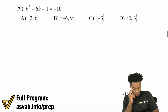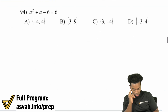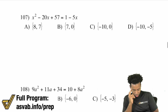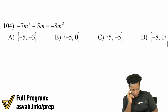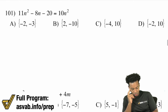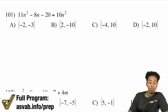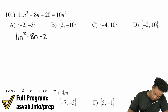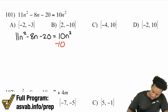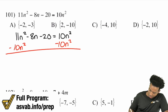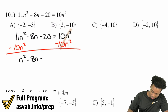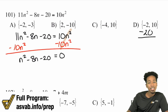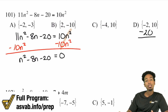Let me find one more example — a pretty unique one. Problem 101: we have 11N squared minus 8N minus 20 equals 10N squared. It doesn't matter — just get a zero by itself. Subtract that 10N squared from both sides: it cancels out on the right and I'm left with 1N squared minus 8N minus 20 equals zero. Now I'm looking at the factors of negative 20 that add up to negative 8. Since C is negative 20, one factor is positive and one is negative, and since they add to negative 8, the larger number is negative.